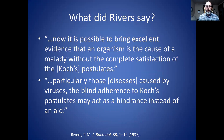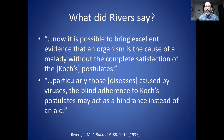I went and looked at Rivers' original 1937 article where he laid out these six criteria and found some interesting quotes. First: 'It is possible to bring excellent evidence that an organism is the cause of a malady without complete satisfaction of Koch's postulates.' Basically, he's saying you can skip steps not included in his criteria and still prove a virus causes disease. Second quote: 'Particularly those diseases caused by viruses, the blind adherence to Koch's postulates may act as a hindrance instead of an aid.' I think this indicates he was looking for a shortcut — perhaps some steps were difficult to perform — making it easier to prove a virus is the cause of disease. I'll still accept Rivers' criteria as valid.